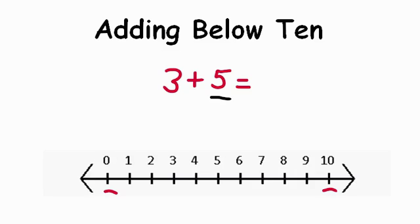So we're going to count on from 5, 3 more. Find 5 on your number line. Here's 5 and we're going to count on 3 more. 1, 2, 3. And we get the number 8.